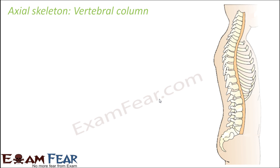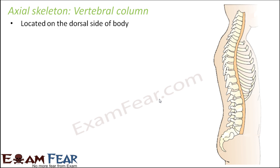Now we will talk about the next part of the axial skeleton, that is the vertebral column. The vertebral column is located on the dorsal side of the human body, that is towards the back side — what we call the backbone. It is composed of 26 serially arranged units, each unit known as a vertebra.